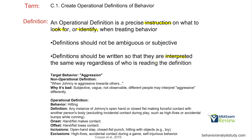They should be written so that they are interpreted the same regardless of who is reading the definition. The key is getting as close as possible to where no matter who's reading it — a technician, a teacher, a parent — we all agree on what the target behavior is. For example, the target behavior is aggression. Saying 'when Johnny is aggressive towards others' is not very operational — what does that mean? How are you going to reliably and consistently measure aggression if we haven't actually defined it? It's subjective, vague, and ambiguous.